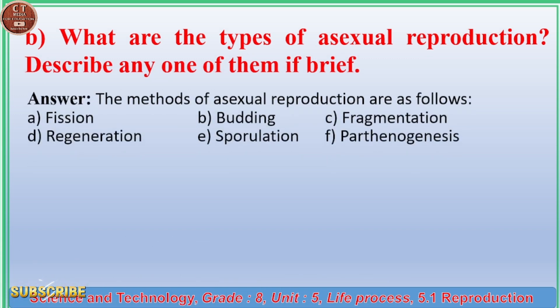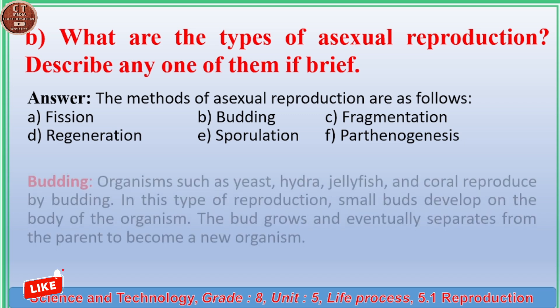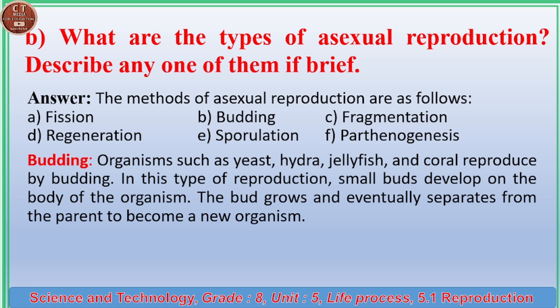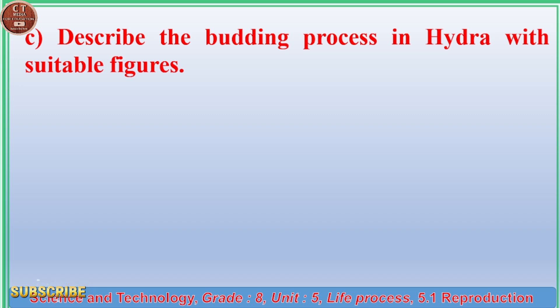Answer: The methods of asexual reproduction are: (a) fission, (b) budding, (c) fragmentation, (d) regeneration, (e) sporulation, and (f) parthenogenesis. Budding: Organisms such as yeast, hydra, jellyfish, and coral reproduce by budding. In this type of reproduction, small buds develop on the body of the organism; the bud grows and eventually separates from the parent to become a new organism.